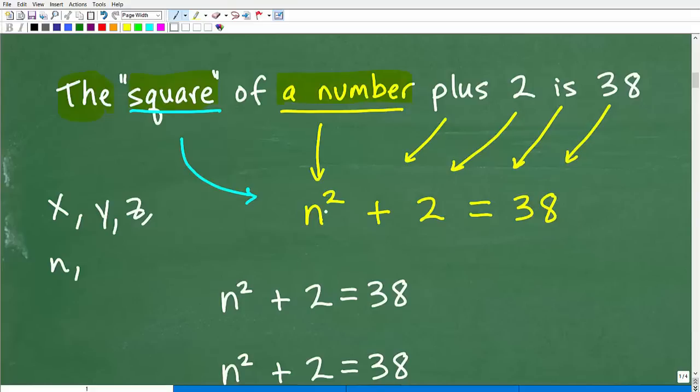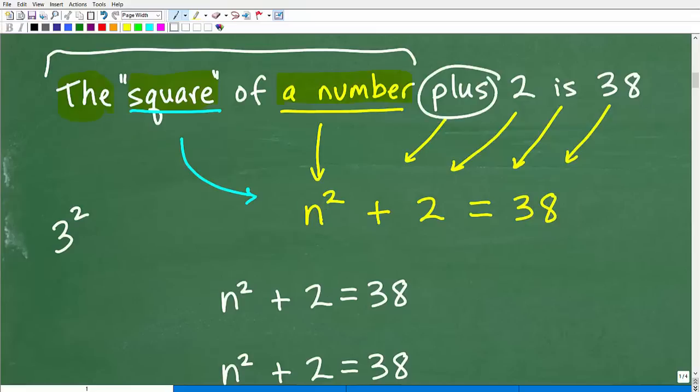But again, any letter, lowercase letter, or any other type of symbol could represent a variable. All right, so the square of a number. Okay, so now I got this number, and now I'm going to square it, okay? Just as if I squared three, the square of three, for example, would be what? Three squared. The square of a number would be N squared or X squared. What you choose for a variable really doesn't make a difference, but this is probably the part that would confuse students the most.